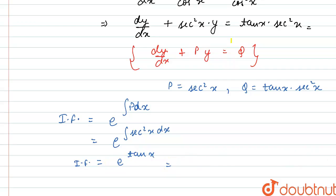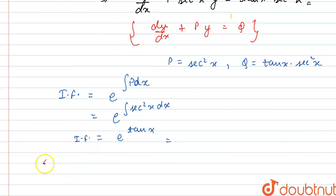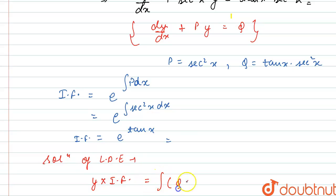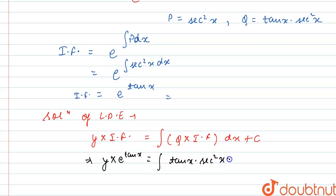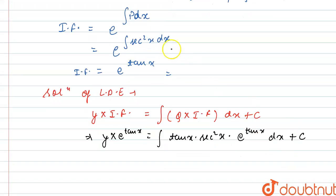The solution of such a linear differential equation, with y as the dependent variable, is of the form: y × (integrating factor) = integral of Q × (integrating factor) dx + constant C. Substituting the values, we get y · e^(tan x) = integral of tan x · sec²x · e^(tan x) dx + C. To solve this integral, let tan x = t.